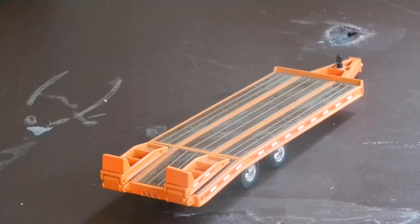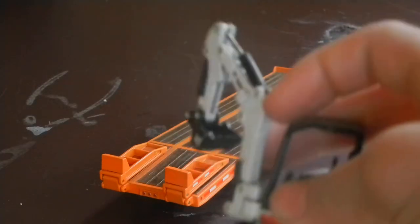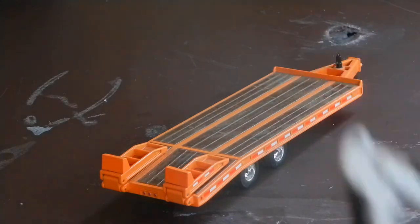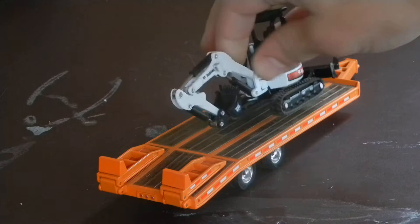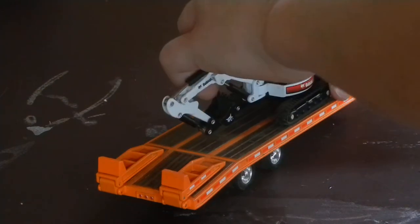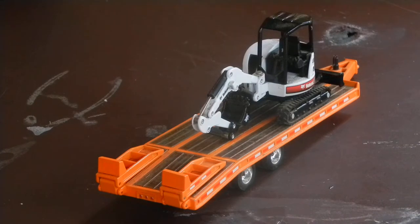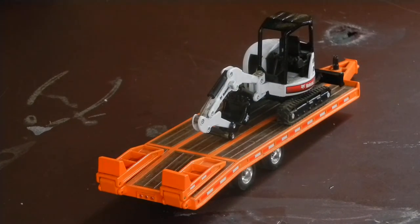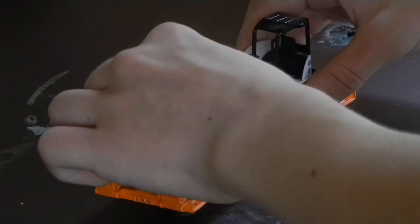So first up is an easy one. This is the Bobcat 430 ZHS Mini Excavator. This is made by Bobcat themselves in 1/50th Scale. Basically, you have a few options with this model. Now, considering this model is so small, you don't really have to package it up the way I did. You can basically just leave it out and whatever, like that.